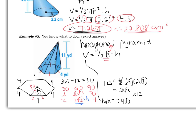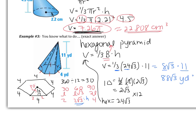Now I'm ready to go back up to my volume. Volume is one-third times the area of the base, which is the hexagon with area 24 root 3, times my height of 11. I don't like that one-third, so I'll take care of it right away: one-third times 24 is 8. So this is really 8 root 3 times 11. Eight times 11 is 88 root 3 yards cubed. The final volume is 88 root 3, which is an exact answer. If you converted it to a decimal, it would be 152.42 yards cubed.